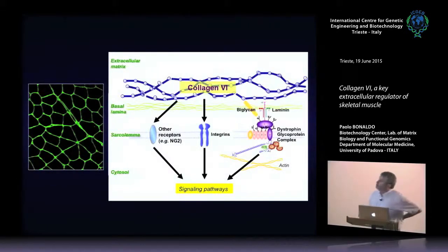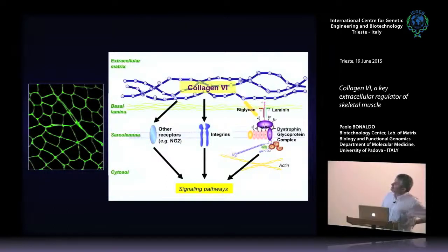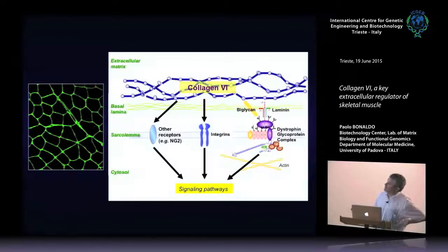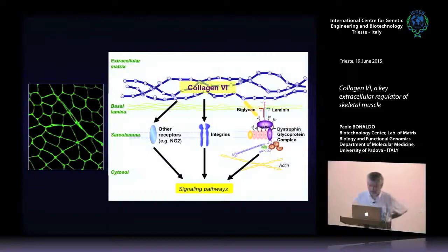This cartoon shows that at the surface of muscle fibers you have the sarcolemma plasma membrane with different receptors, the basal lamina, and collagen 6 very close to the surface interacting with different receptors and activating different signaling pathways.